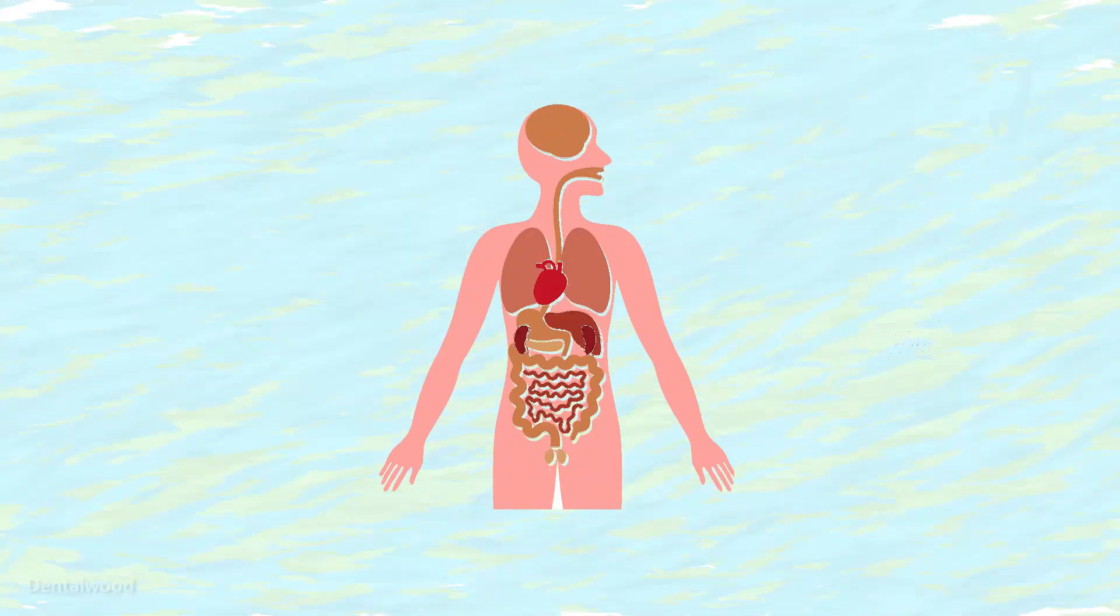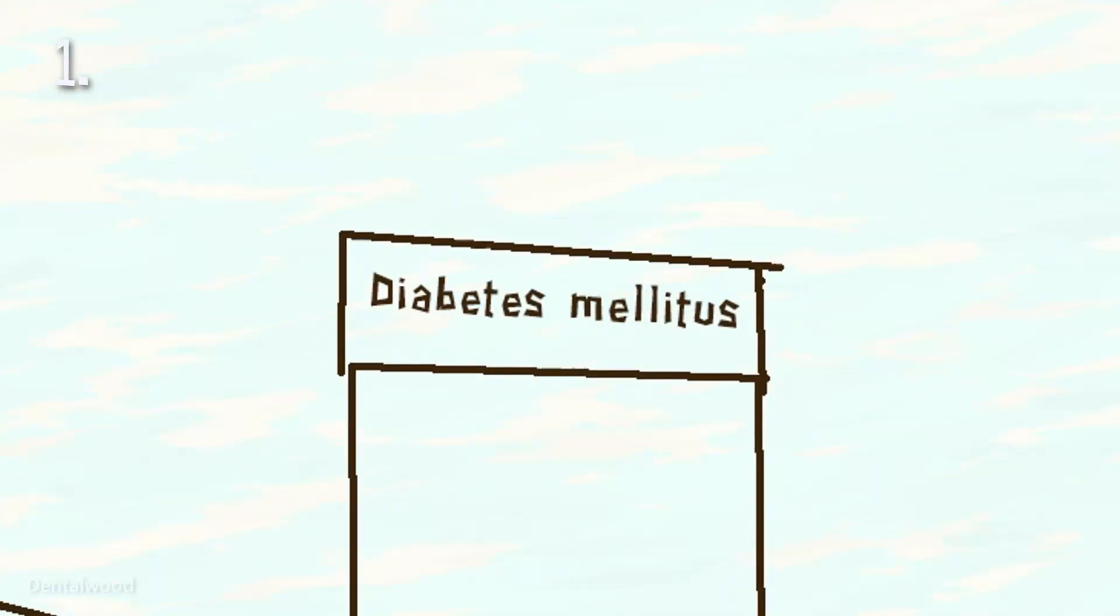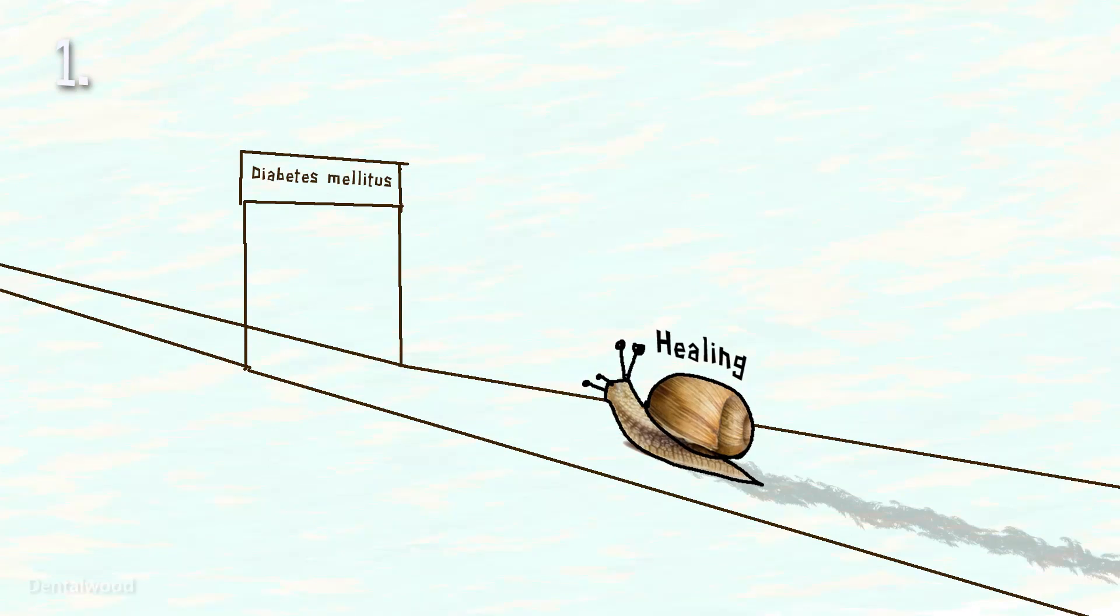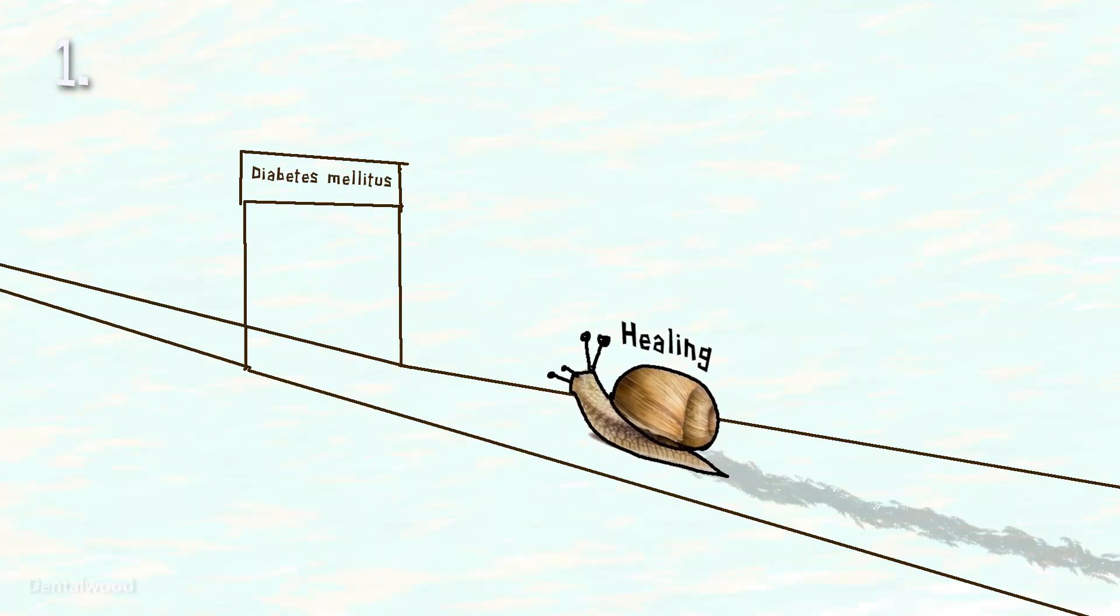Systemic factors are the factors within the system of human body. No extraction in case of uncontrolled diabetes mellitus since the healing is too late to appear or delayed.